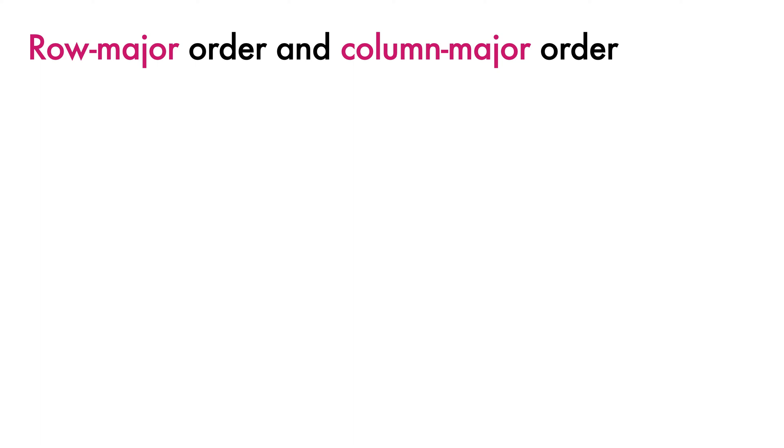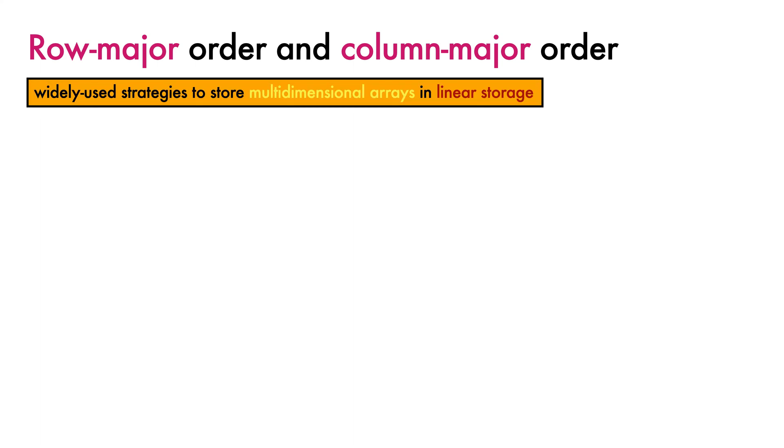Row Major Order and Column Major Order are two widely used strategies to store multi-dimensional arrays in linear storage. In this video, we will look at how they work.